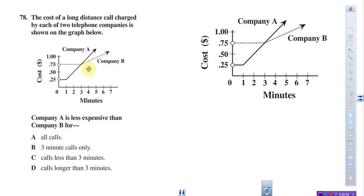Let's look at this graph. Company A is the solid line and Company B is the dashed line. We're looking for when A is less expensive than B. If you pick any given point, say like one minute, you can take a look here.